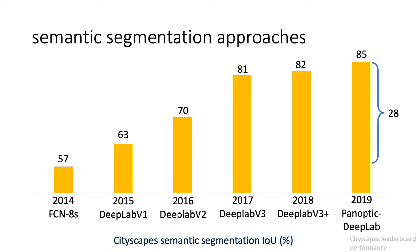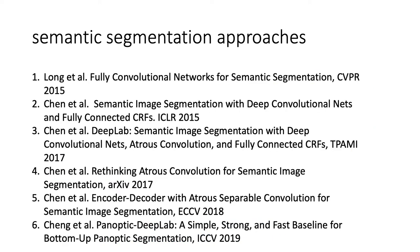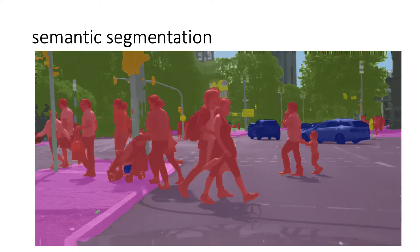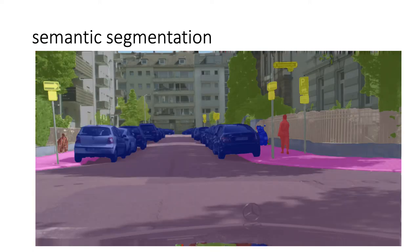There has been stable progress over the years for semantic segmentation. Starting from 57% IoU in 2014, recent methods achieved 85 IoU on the Cityscapes dataset, which is undoubtedly impressive. Here are examples of semantic segmentation predictions for images from the Cityscapes dataset. Each pixel is assigned a color corresponding to its predicted category, overlaid with the input image. The prediction of modern methods is quite precise.